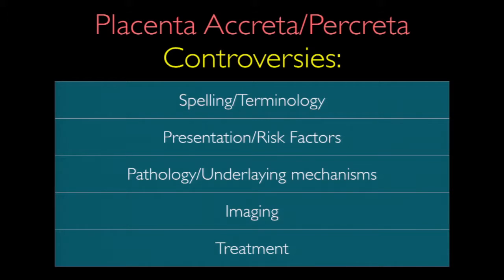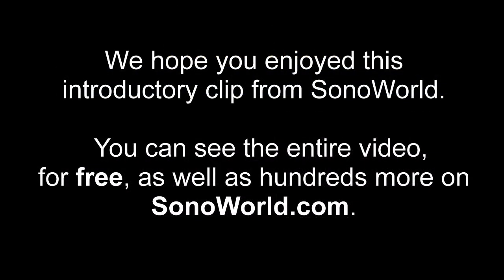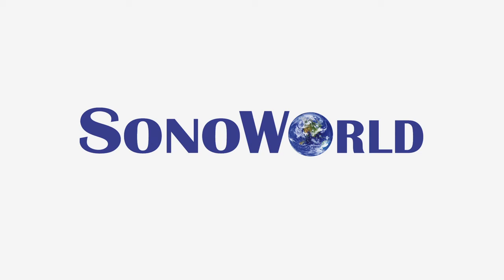And of course, as far as what really mostly relates to us, controversies in imaging, and also controversies in treatment. So starting out with spelling and terminology, the term 'placenta accreta' is derived from a Latin term — accretus, accretum — which means encased in or overgrown with.